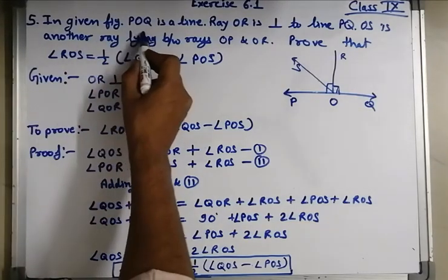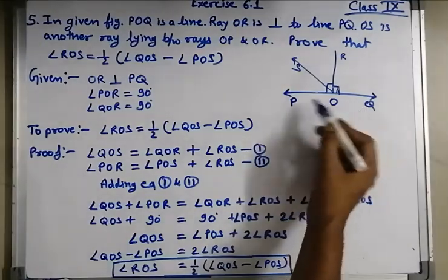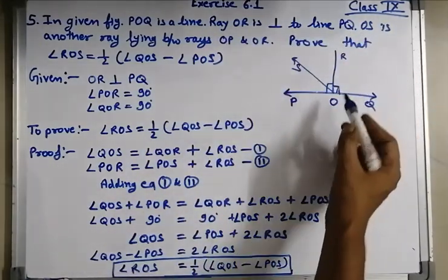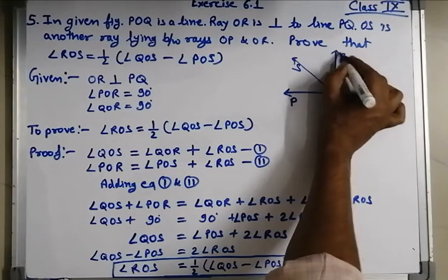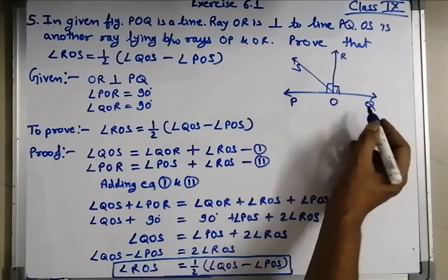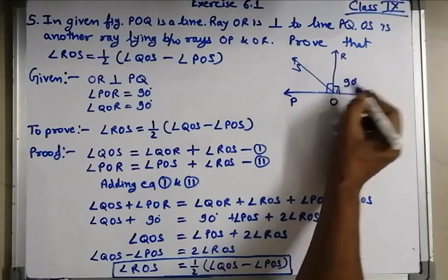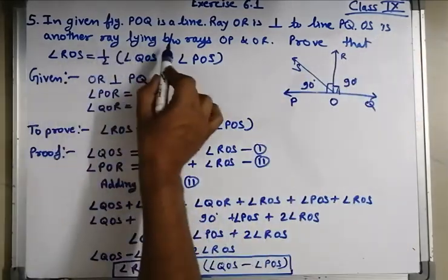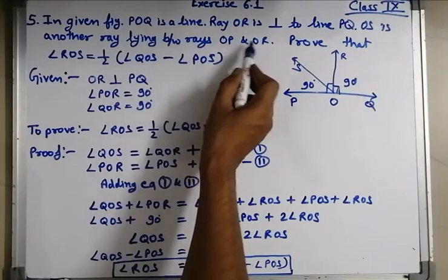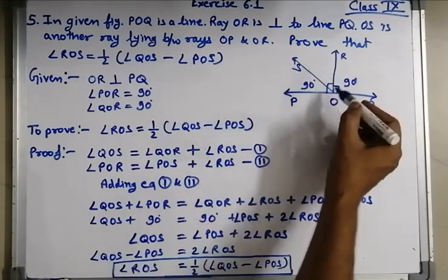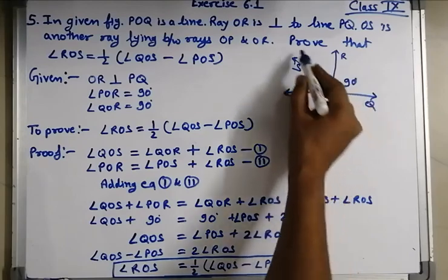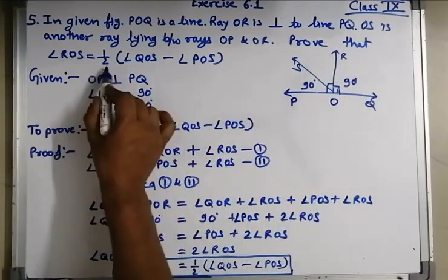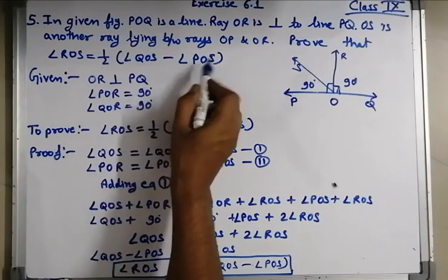Question number 5. In the given figure, POQ is a straight line. Ray OR is perpendicular to line PQ, so this angle is 90 degrees and the remaining part is also 90 degrees. OS is another ray lying between ray OP and OR. Prove that angle ROS is equal to one upon two of (angle QOS minus angle POS).